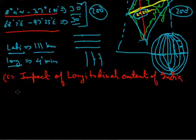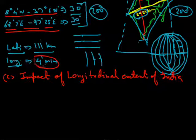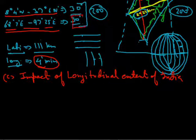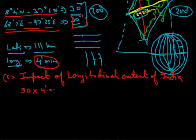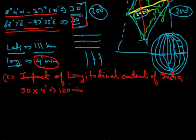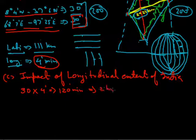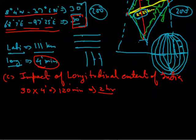Looking at the longitudinal extent, the difference between each longitude is 4 minutes. India spans 30 degrees of longitude, so there are 30 longitudinal lines. Multiplying 30 by 4 minutes gives 120 minutes, which equals 2 hours. So the time difference between the eastern and western ends of India is 2 hours.